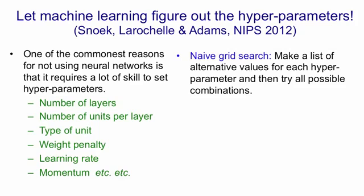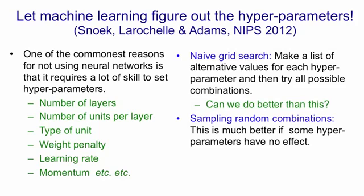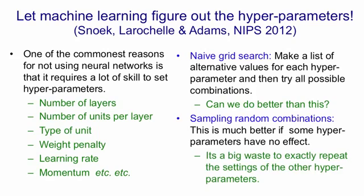It turns out there's something considerably better than a naive grid search: we can just sample random combinations. That is, for each hyperparameter we make a list of alternatives and pick one randomly from each list. The reason that's better is because some hyperparameters won't have much effect and others will have a lot of effect. In a grid search, you'll have several points along each axis that are identical for all other parameters, so if moving along that axis makes no difference, you've replicated the same experiment many times and haven't learned anything about the other parameters.